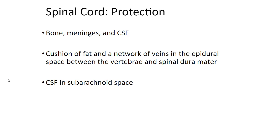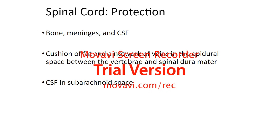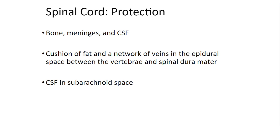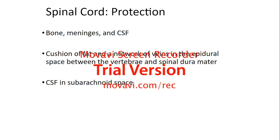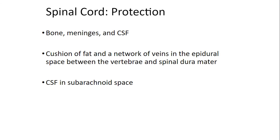You don't want your spinal cord to get damaged — neural tissue doesn't regenerate itself, so once it's damaged it's damaged. Bones protect your spinal cord, as do the vertebrae, meninges, and cerebrospinal fluid. Cushions of fat and a network of veins in the epidural space between the vertebrae and spinal dura mater, plus the cerebrospinal fluid in the subarachnoid space, all protect your spinal cord.